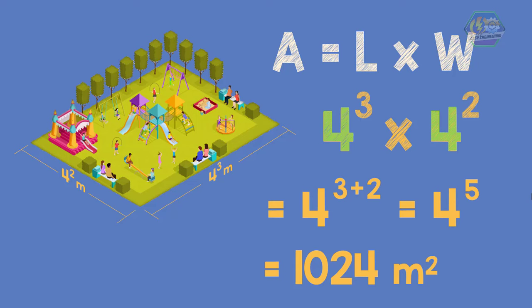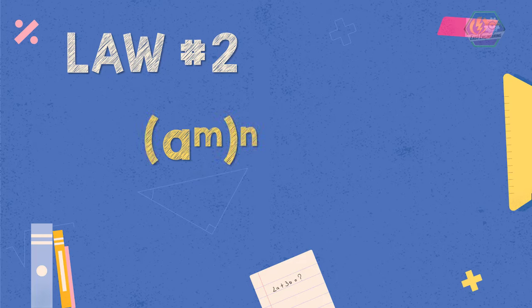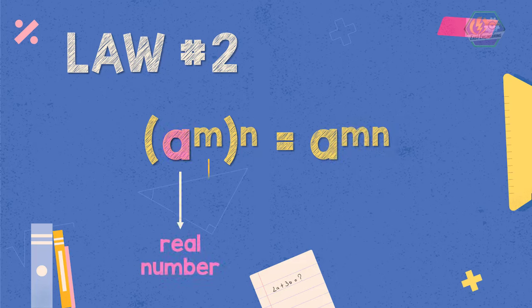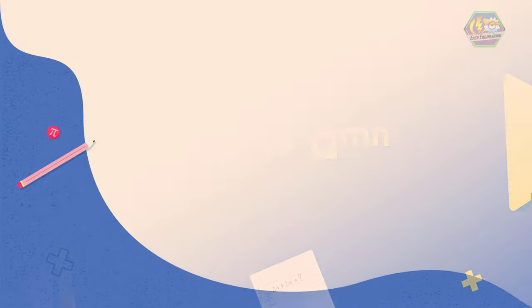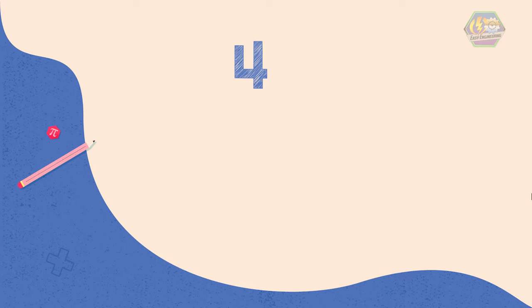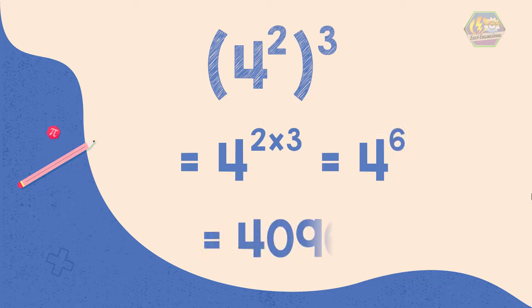Now let's proceed to Law 2. A raised to the power of m raised to the power of n is equal to A raised to the power of m times n, where A is a real number and m and n are positive integers. For example, 4 raised to the power of 2 raised to the power of 3 will become 4 raised to the power of 2 times 3. Therefore, the equation will become 4 raised to the power of 6, which is equal to 4096.